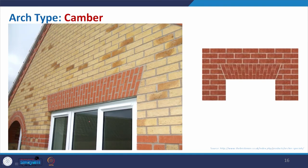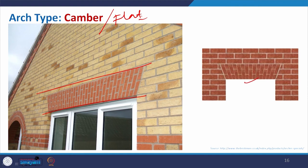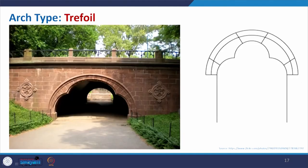Coming to the camber or flat arch: this kind of architectural treatment is commonly seen in Germany, where the lintel part of a window or similar opening uses this flat arch for decoration. Sometimes the same material is used to give a similar look, or a variation in brick texture or color can be used. This is the flat arch.